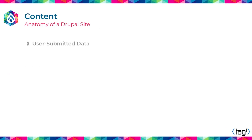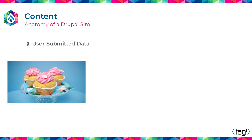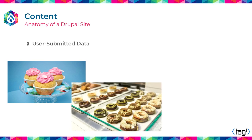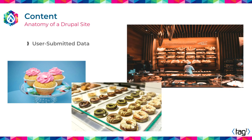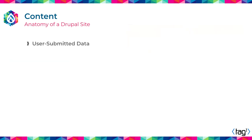Content is any user-submitted data. In the case of the bakery analogy, the cupcakes are the content. But it is likely that you are not only showing one type of data in your website — we can have cupcakes, we can have donuts, we can have bread. Similarly, in Drupal, there are different types of content. The most common one is nodes — and honestly, it's probably the most confusing because it's one of the most generic words you're going to hear in technology.